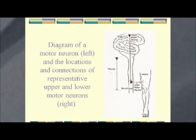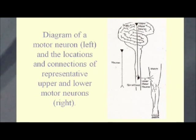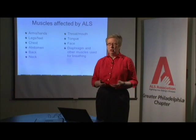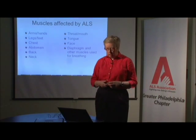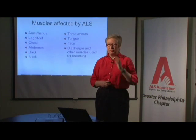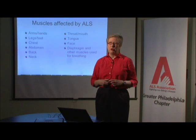I want to show you the muscles that are involved with ALS. These are all of our voluntary muscles — the muscles affected by the motor nerve — and that would be the arms, hands, legs, feet, chest, abdomen, back, neck. If somebody doesn't have good neck control, their neck is going to be down. Throat and mouth — we use these muscles to chew, swallow, and speak. The tongue is a voluntary muscle, so that becomes affected. The face, and most importantly, the diaphragm and the other muscles we use to breathe are eventually affected by ALS.